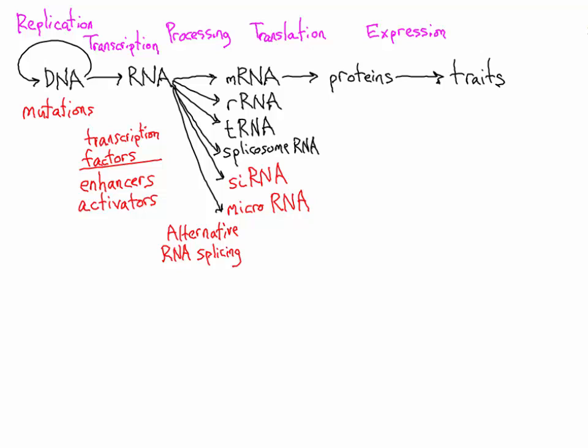During the translation process different chaperone proteins help the developing protein to fold into the correct shape so these chaperone proteins or chaperonins are active during the translation stage and can also regulate gene expression resulting in a different protein from the same gene.